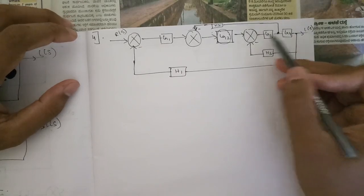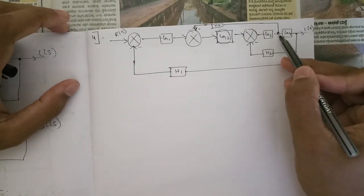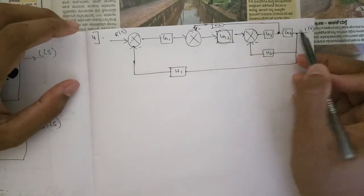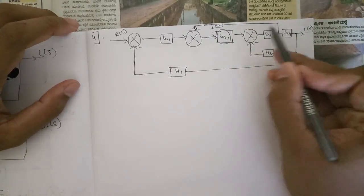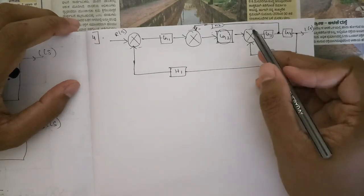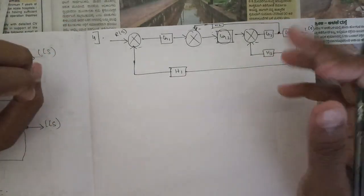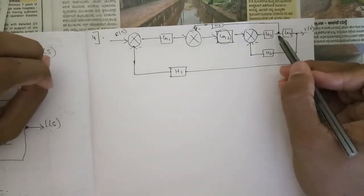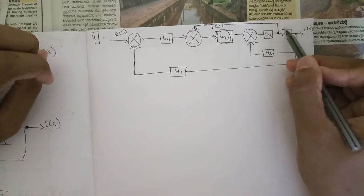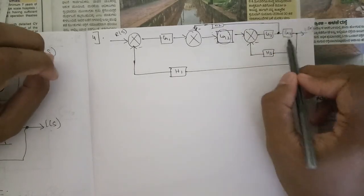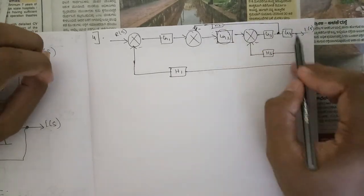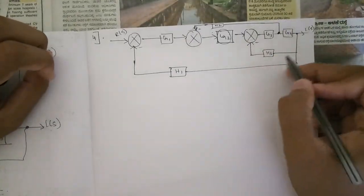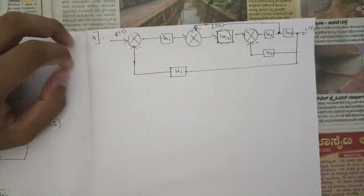And here we can see that between this G3, G4 we have one takeoff point. In order to make these two in series we need to shift this takeoff point either to the left of the block or right of the block. So here if you shift it to the left of the block we can see that we have a summing point, so it would be much more tougher to solve. So let's shift this takeoff point to right of the block. That is, we need to multiply it by one by G4. So H2 into one by G4, that would be H2 by G4. And rest, these two would be series, multiply them, then we would be having a minor loop and go on solving like that.